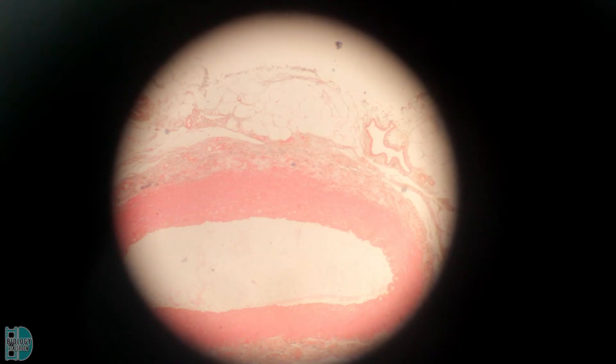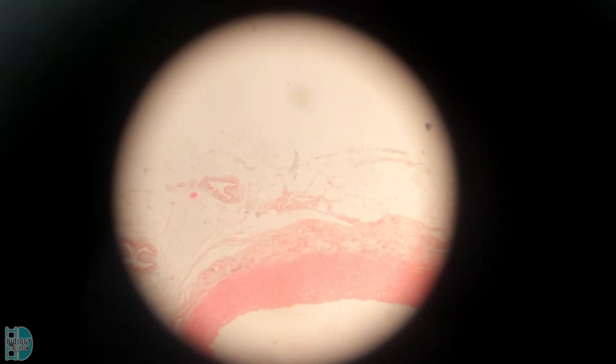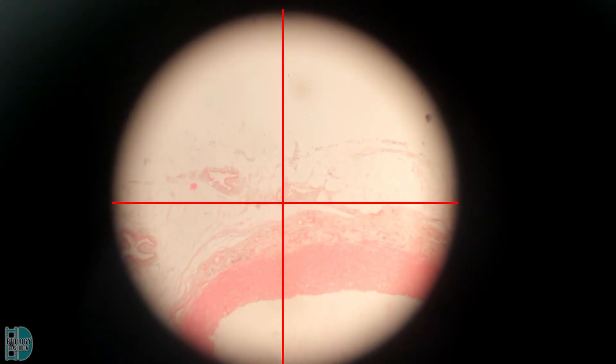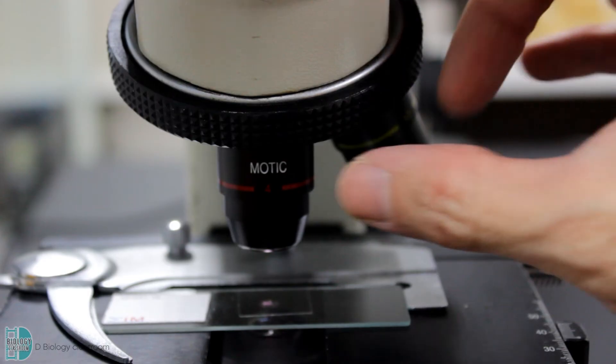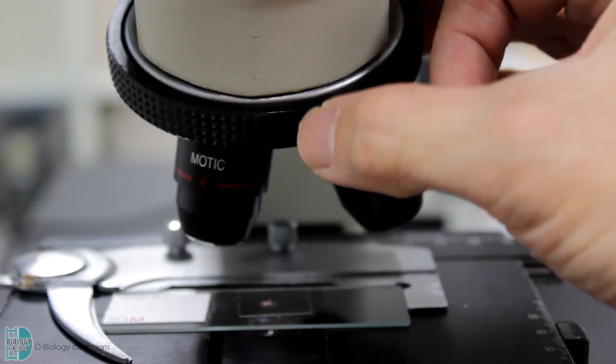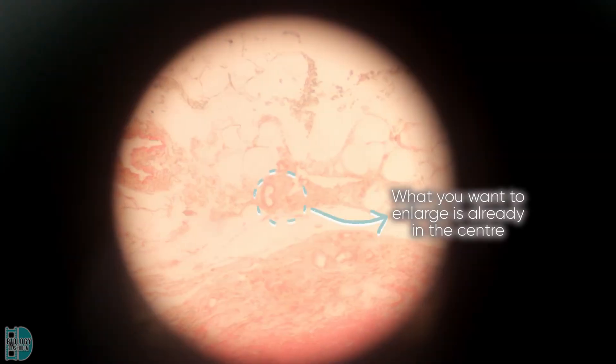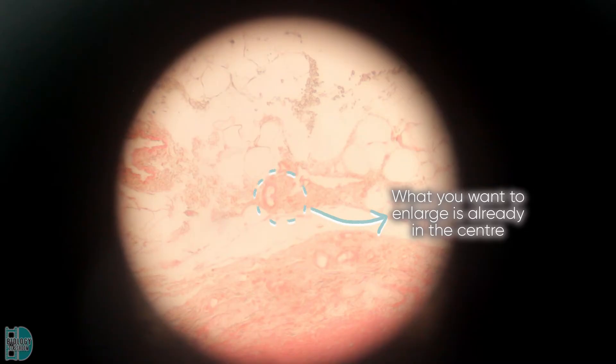You can now use the stage control to move the specimen around. If you need to enlarge a particular part, place that part in the center of the field of view. Use the revolving nosepiece again to change to a higher power of objective lens. The structure you want to see will be in the center of the field of view, so you don't have to move it much.